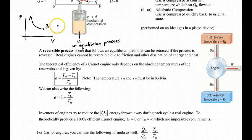Imagine in a PV diagram where you have an isothermal expansion from A to B. Then if this process were reversible, then it would follow an equilibrium path that could be retraced from B to A.